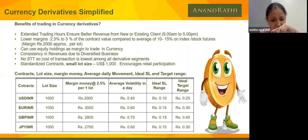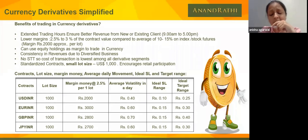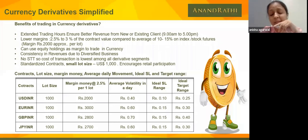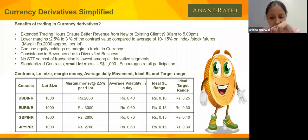GBP/INR: lot size remains 1,000, margin required is 2,800 rupees. Volatility is a bit higher — 70-80 paisa. With disciplined trading at 15 paisa stop loss and 40 paisa target: stop loss triggered means 150 rupees loss; target achieved means 400 rupees gain on one lot. JPY/INR: lot size 1,000, margin 2,700 rupees, average volatility 60-70 paisa. Stop loss 15 paisa equals 150 rupees loss; target 30 paisa equals 300 rupees profit. As you can see, the risk is not high.